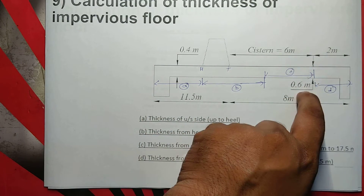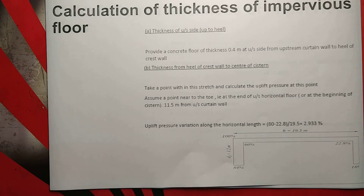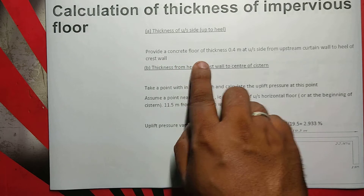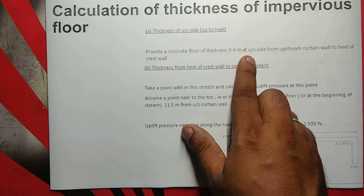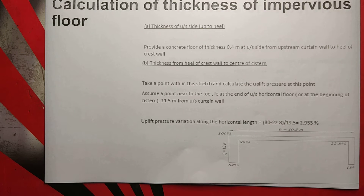Using the unit system and in the next step we will connect with 4 areas. Here we can connect and notice how much length we want. The thickness at upstream side instead of heel, then provide concrete floor of thickness 0.4 meter. At upstream side from upstream curtain wall to heel.